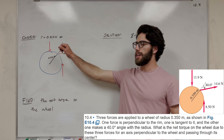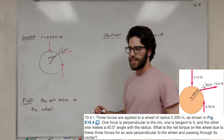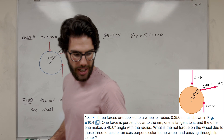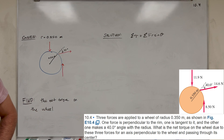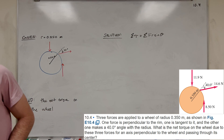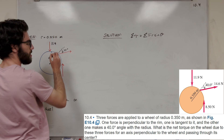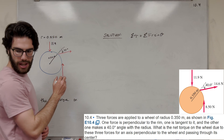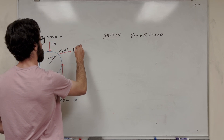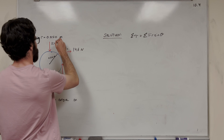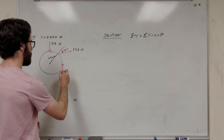So we have this wheel here with a radius, and it has these three forces acting on it. I just now realized I forgot to draw the forces on there. So we got 11.9, we got 14.6 — these are all in newtons — and this is 8.5 newtons.